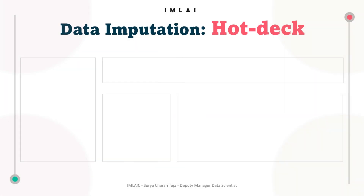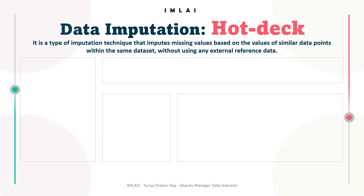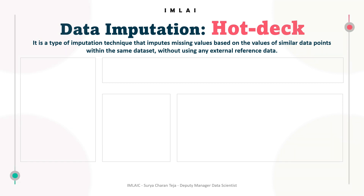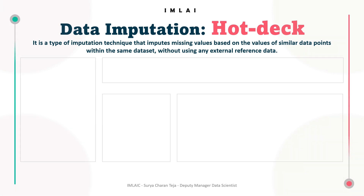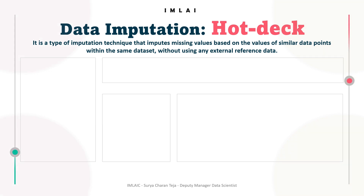Let's look into the hot deck imputation method. Hot deck imputation is a method used to fill missing values in a dataset by borrowing values from similar or nearby observations. It's a type of imputation technique that imputes missing values based on the values of similar data points within the same dataset, without using any external reference data.